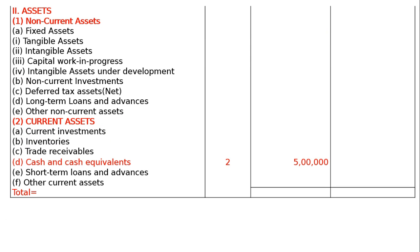The next part is Part 2 — assets. Non-current assets: A is fixed assets, under which 1 includes tangible assets, intangible assets, capital work in progress (semi-constructed buildings), and intangible assets under development (half-made assets). Then non-current investments, deferred tax assets net, long-term loans and advances, and other non-current assets. Part 2 is current assets: A is current investments, B is inventory, C is trade receivables, D is cash and cash equivalents — that is Rs. 5 lakhs, E is short-term loans and advances, F is other current assets, and the total.